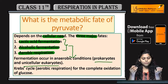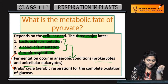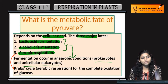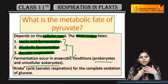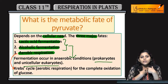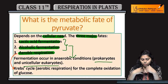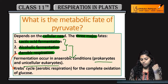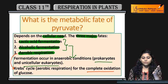Aerobic respiration किसमें होती है? Aerobic respiration होती है, Krebs cycle होती है, जितने भी eukaryotes हैं — हम human beings में aerobic respiration होती है, for the complete oxidation of glucose.